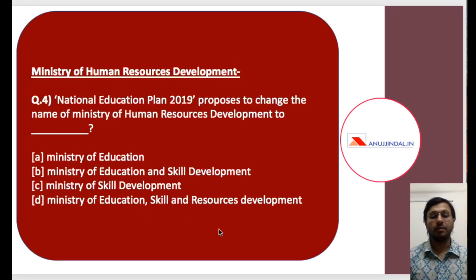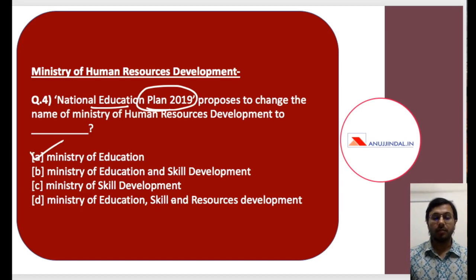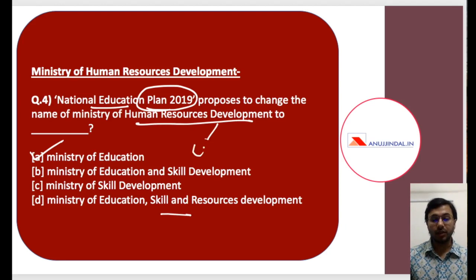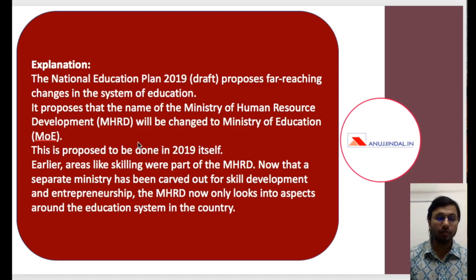The fourth question is about the Ministry of Human Resource Development. The National Education Plan 2019 — this is the plan, not the policy — proposes to change the name of the Ministry of Human Resource Development. What is the new name? The answer is Ministry of Education. The reason is simple: there is already a Ministry of Skill Development, and since human resource development includes both education and skill development — and skill development has already been separated into its own ministry — the Ministry of HRD is actually looking after only education and should be renamed accordingly.